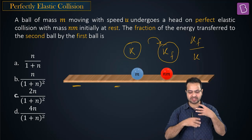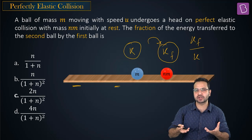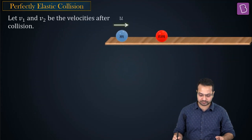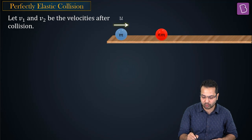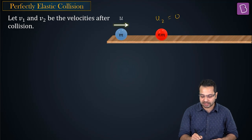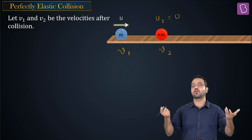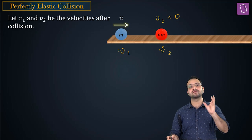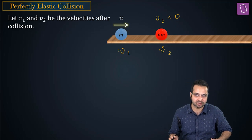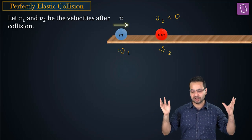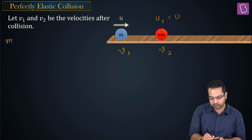This is a typical collision problem. We have initial velocities, final velocities, and coefficient of restitution. Ball m moves with velocity u initially; ball nm has u2 = 0. After collision, final velocities are v1 for m and v2 for nm. First, we write conservation of linear momentum: mu equals mv1 plus nm·v2.